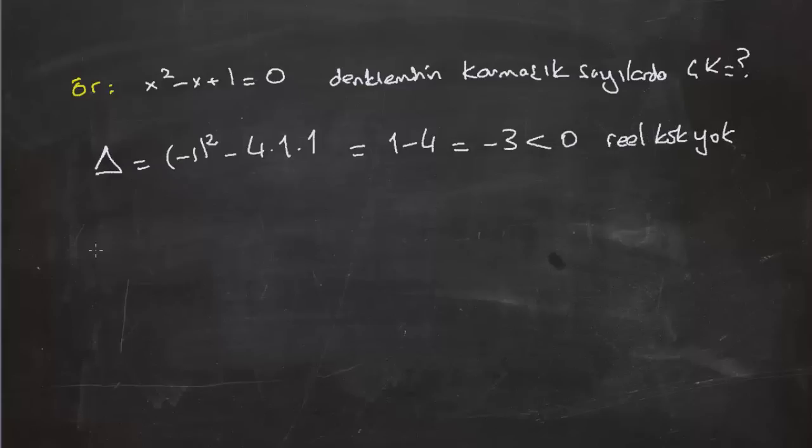Fakat eğer köklerin formülünü hatırlarsak x₁,₂ = (-b ± √Δ) / 2a idi. x'in katsayısının negatifi +1 ediyor. A da x karenin katsayısı burada bir. O yüzden iki çarpı bir iki ediyor.